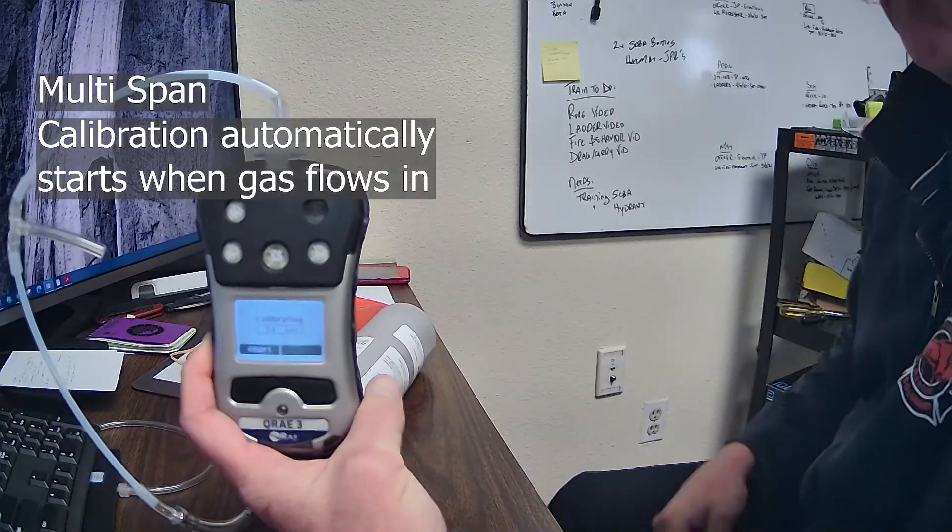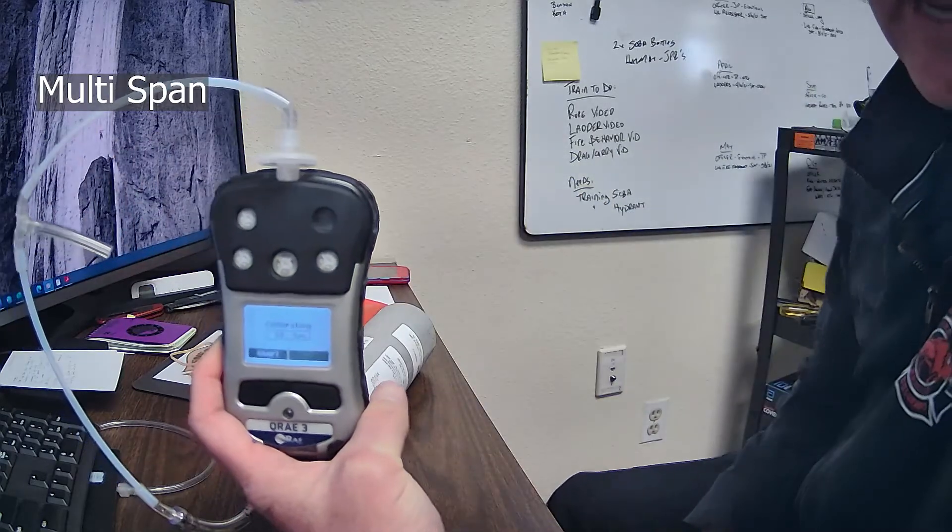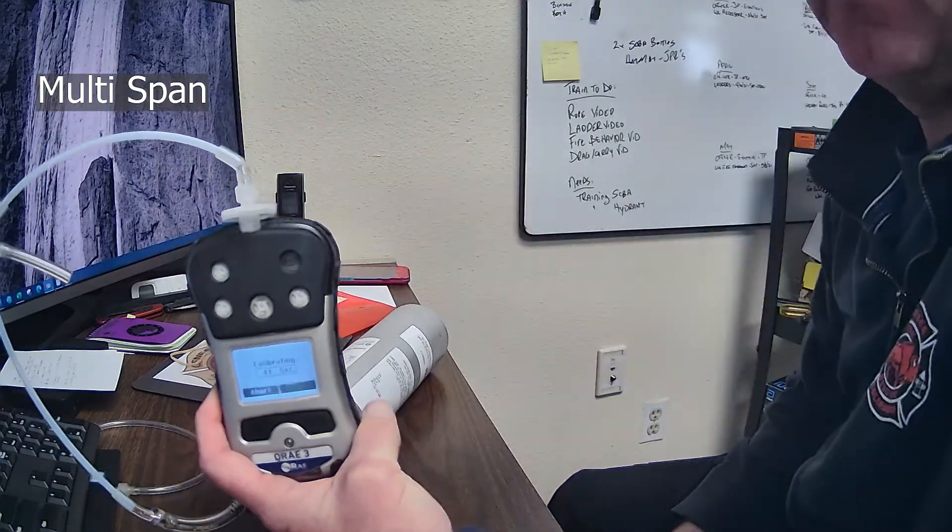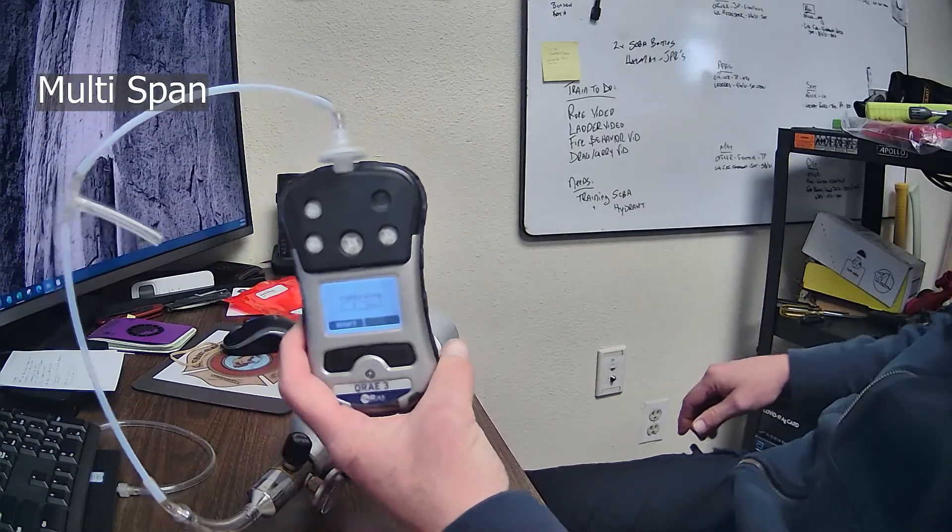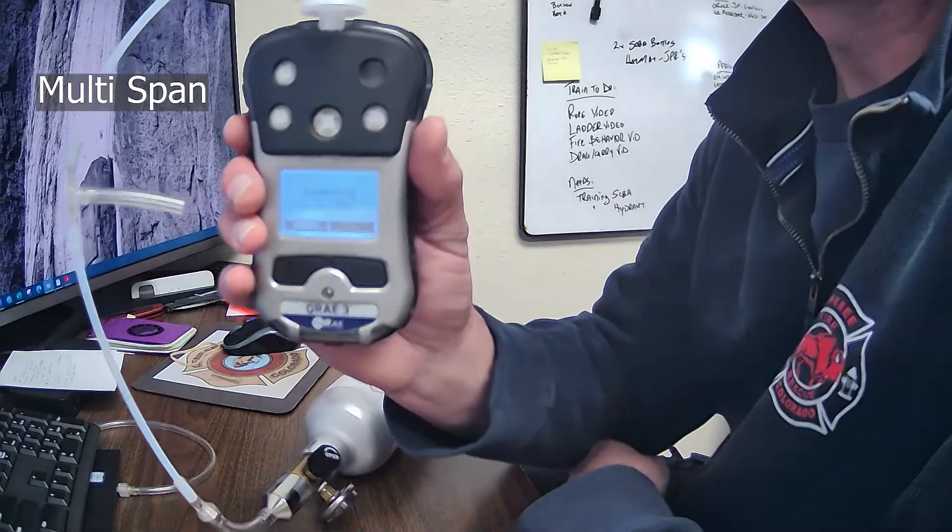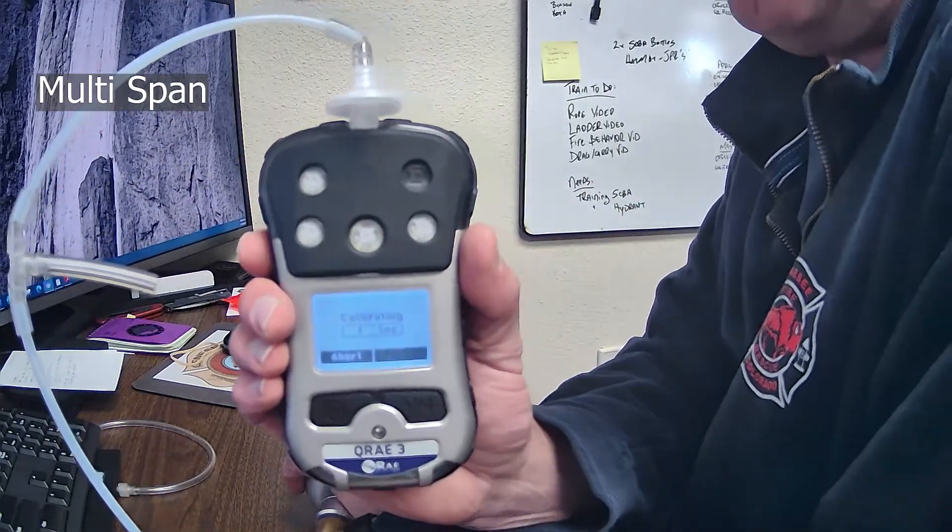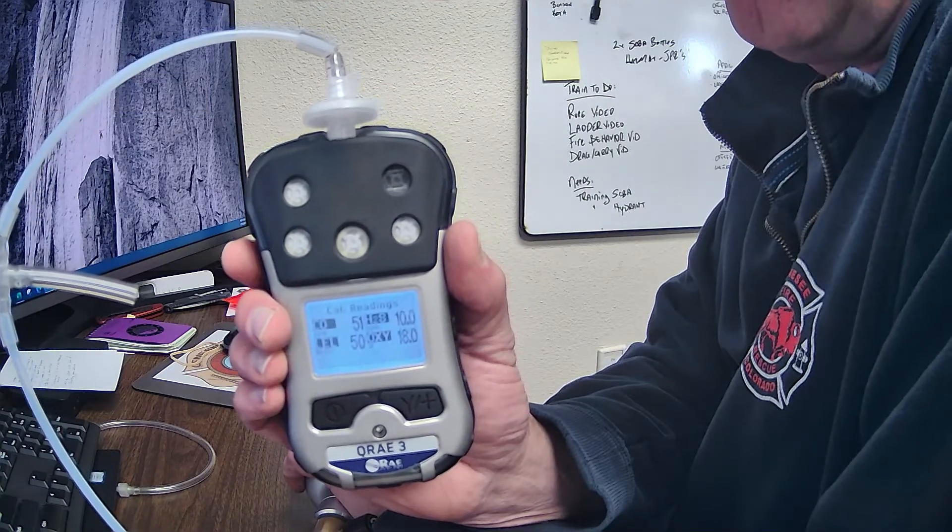So, we're hanging out, and what this does, this little T, all it does is it blows off excess gas to the level to where this pump can handle it. Okay, we're getting there. Calibrating. Zero seconds.